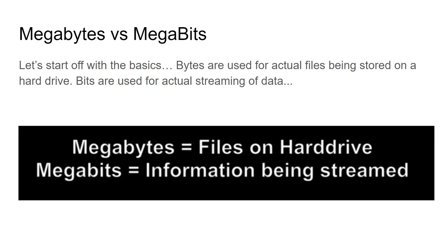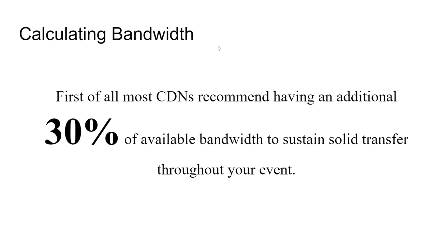Megabytes are files on your hard drive — actual files that exist on your hard drive; they're not streaming necessarily. Megabits is information that's being streamed, and that's how we measure bandwidth — in megabits.